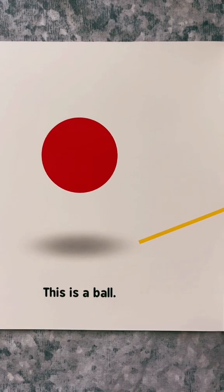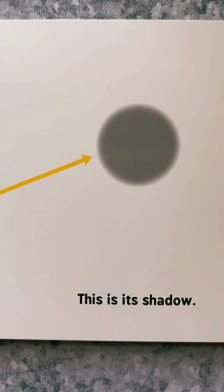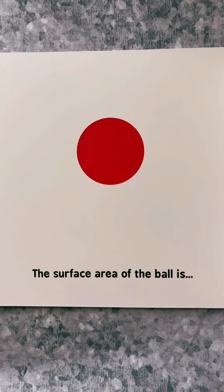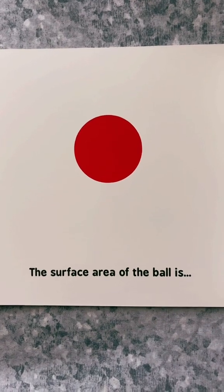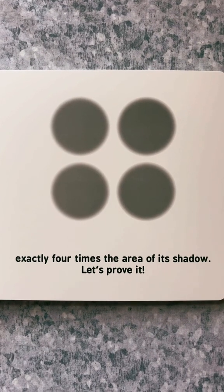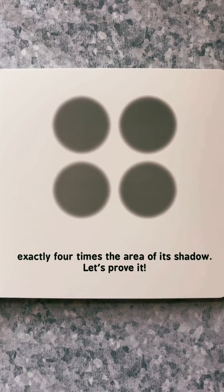This is a ball. This is its shadow. The surface area of the ball is exactly four times the area of its shadow. Let's prove it.